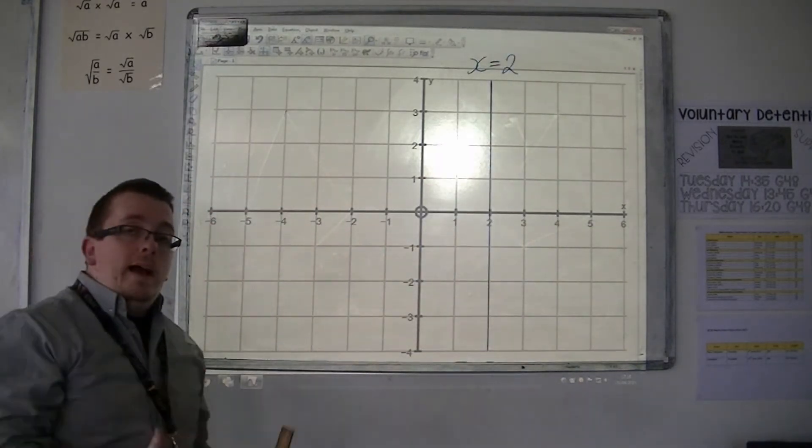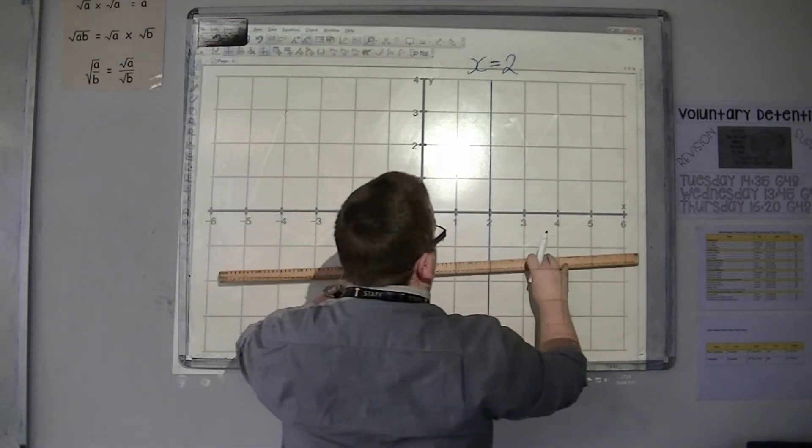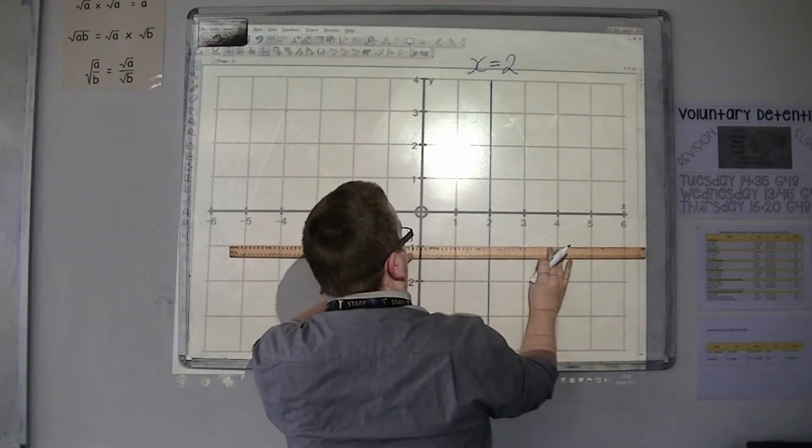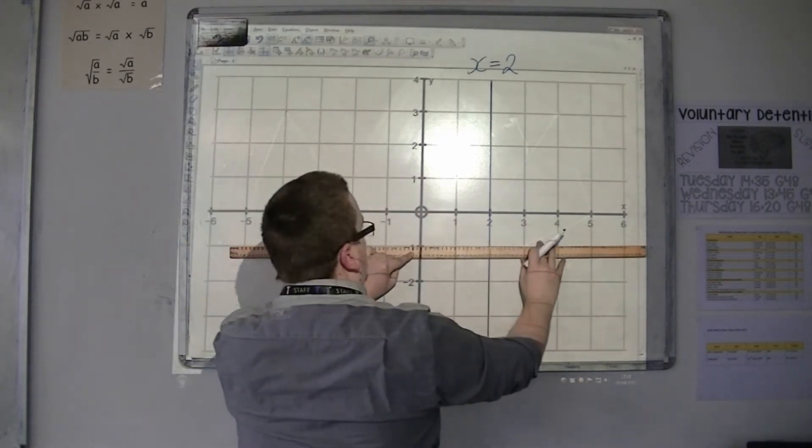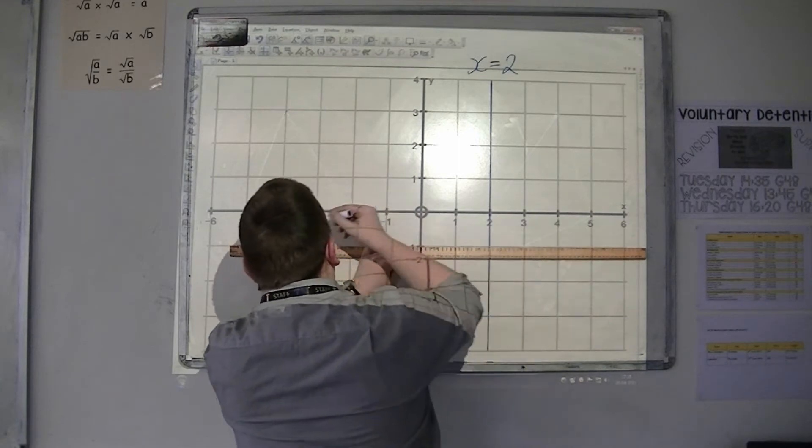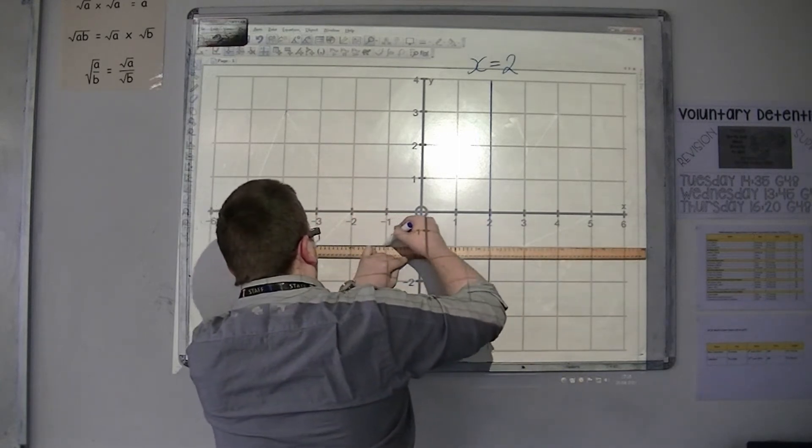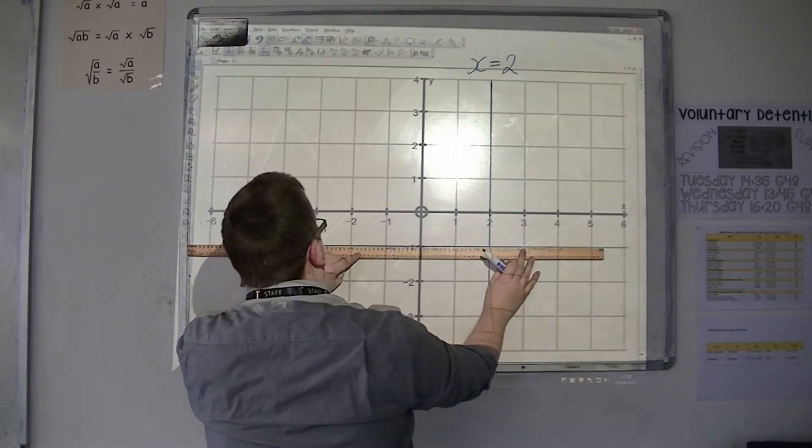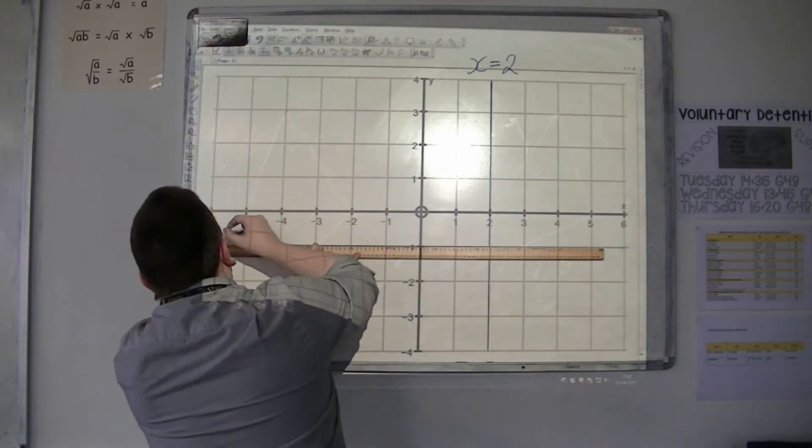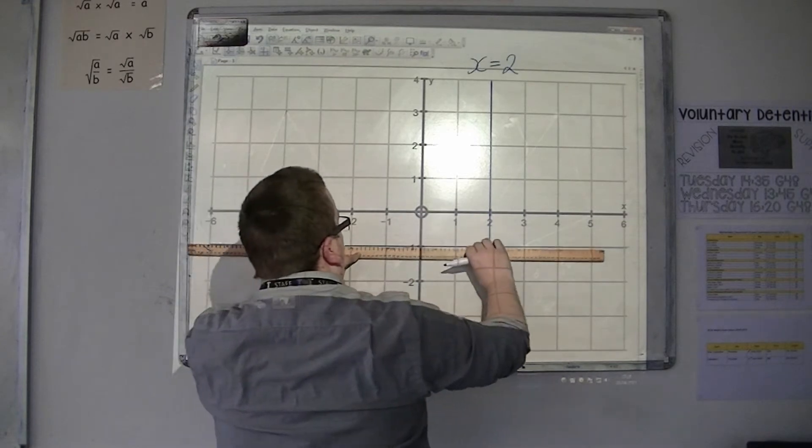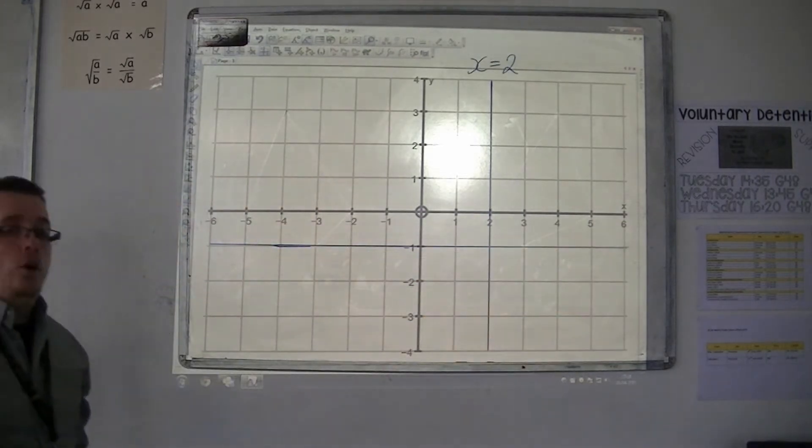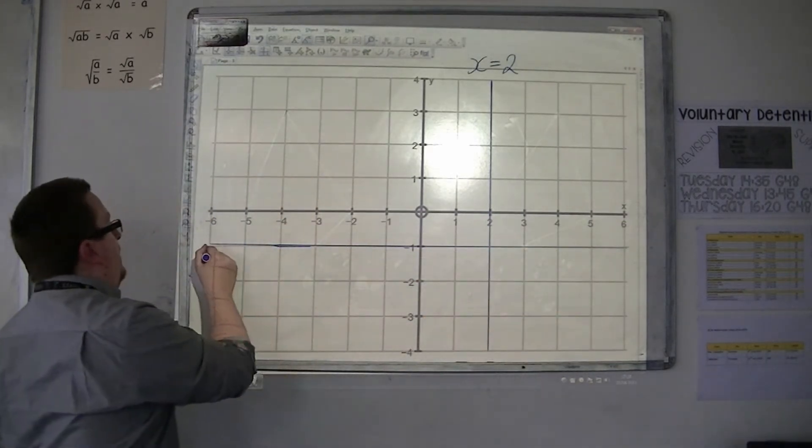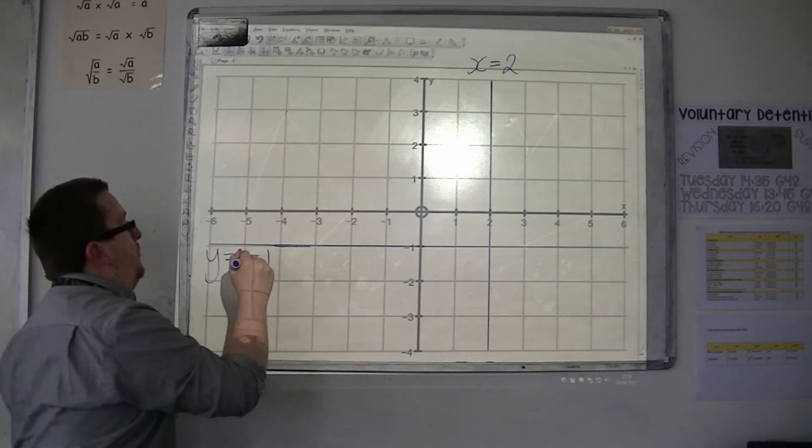And if you had a horizontal line going through minus 1, for example... didn't do that very well, let's have another go. So there's a line going through minus 1. Because it goes through minus 1 on the y-axis, this line is given the equation y equals minus 1.